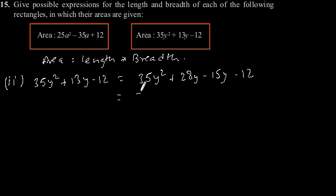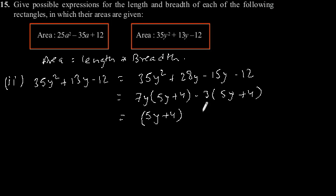This is equal to, taking common, 7y(5y + 4) - 3(5y + 4). This is equal to (5y + 4)(7y - 3).